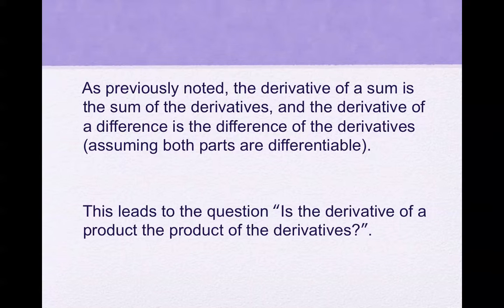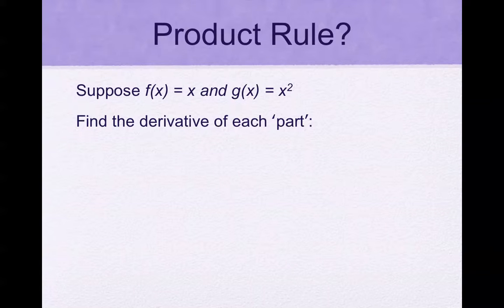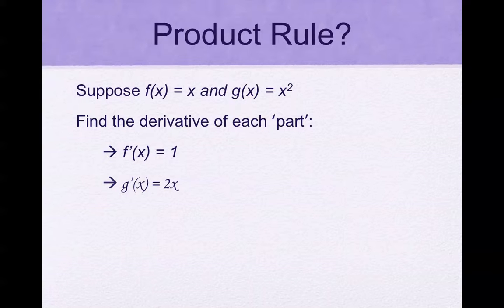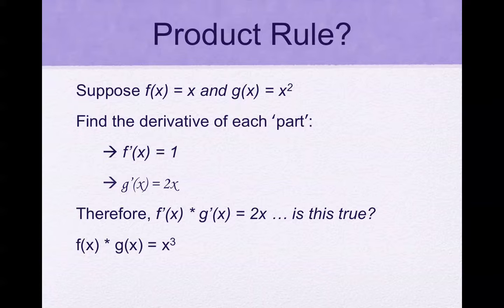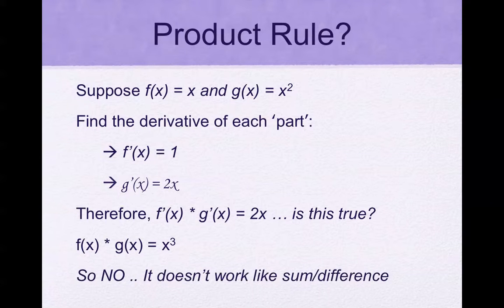This leads to the question: is the derivative of a product the product of the derivatives? Suppose f(x) = x and g(x) = x squared. The derivative of x is 1 and the derivative of x squared is 2x. If we multiply those together, we get 2x. But no, it doesn't work like sum and difference, because f times g equals x cubed, and the derivative of that is 3x squared, which is not 2x. So it's not true.